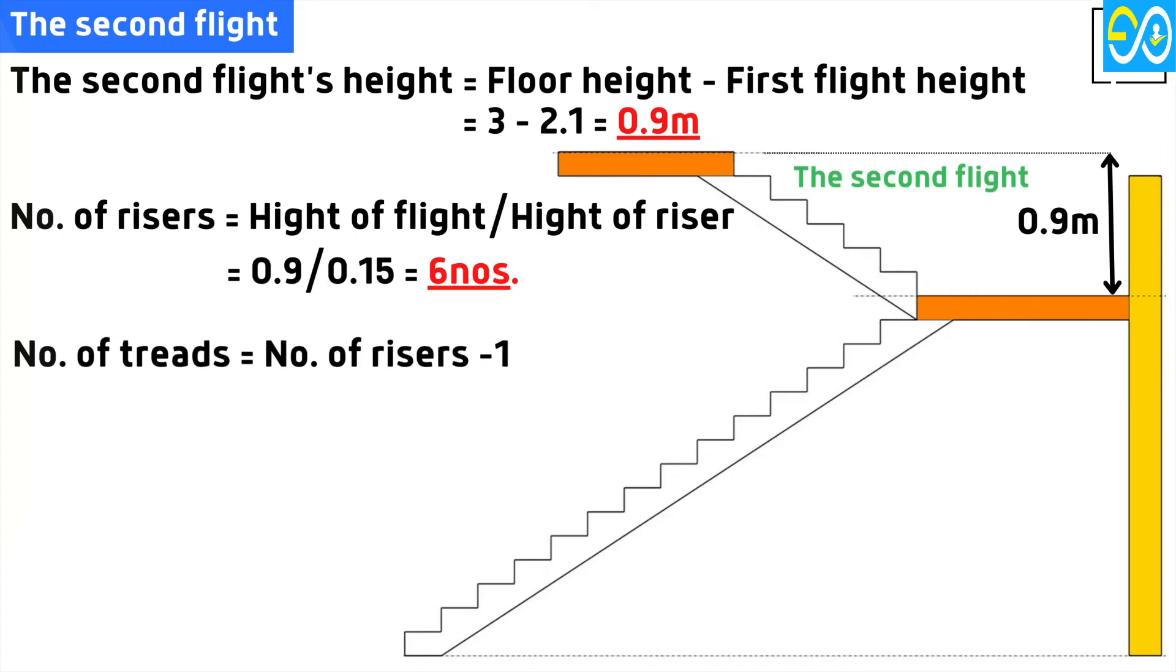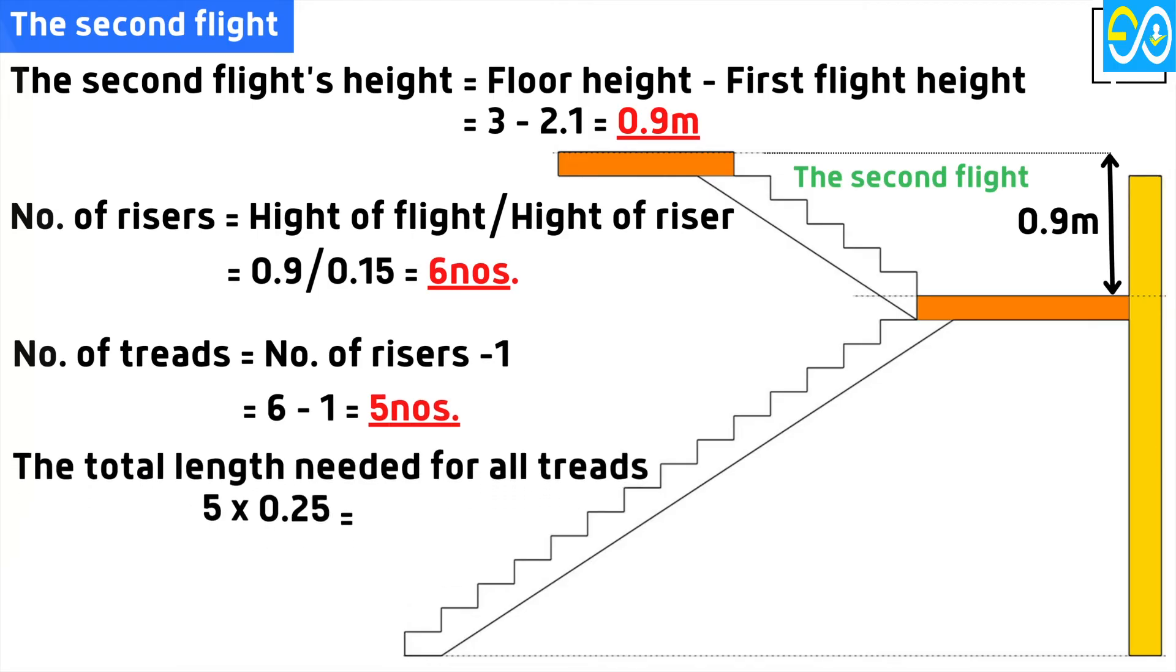Number of treads equals number of risers minus 1 equals 6 minus 1 equals 5 numbers. The total length needed for all treads equals 5 times 0.25 equals 1.25 meters.